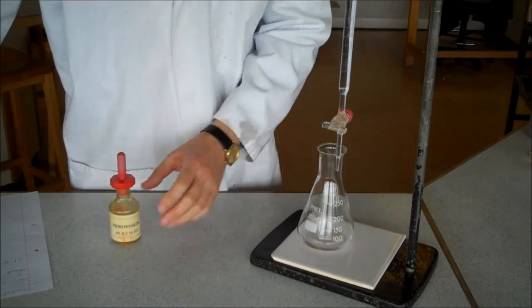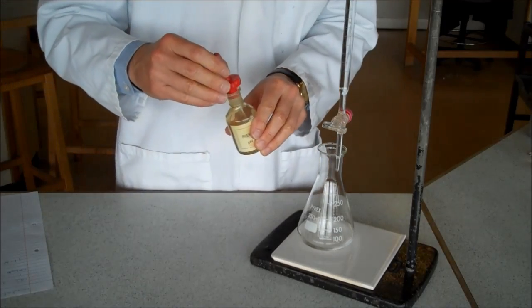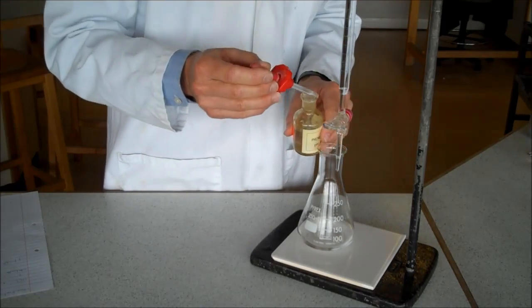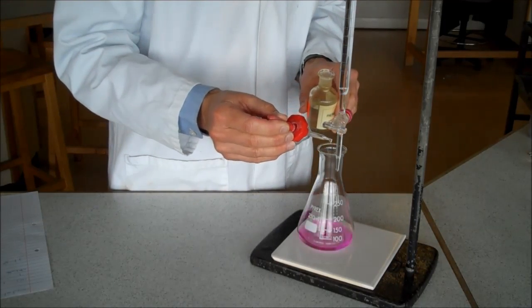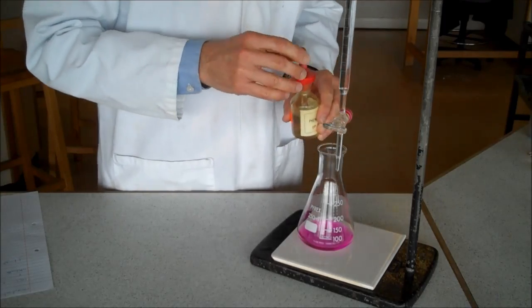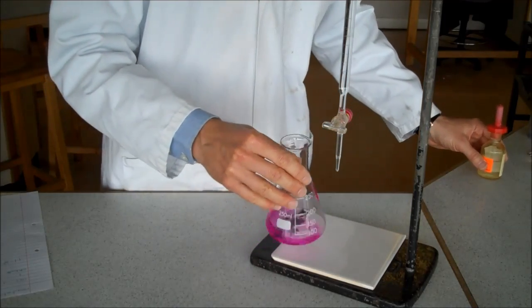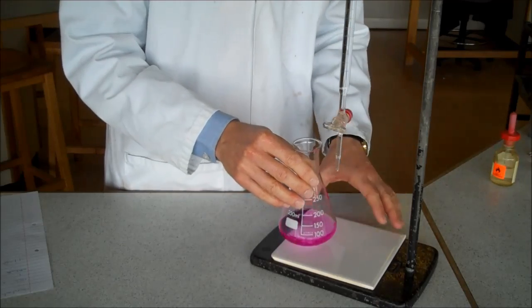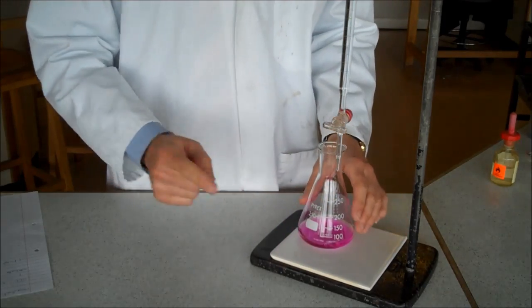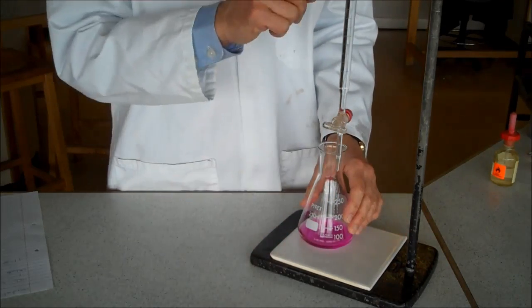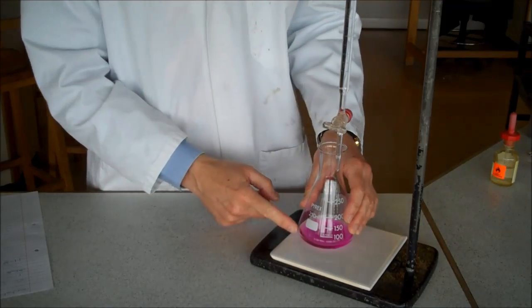Next thing, I need an indicator to tell me whether or not it's neutral. 1, 2, 3, 4, 5 drops of phenolphthalein gives a bright pink colour in alkali. So, my alkali's in there, my acid's in the burette, and at the moment it's bright pink.